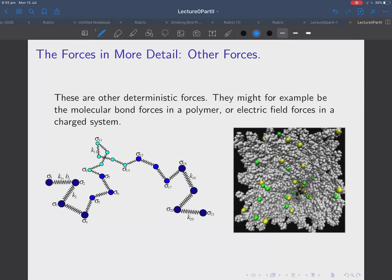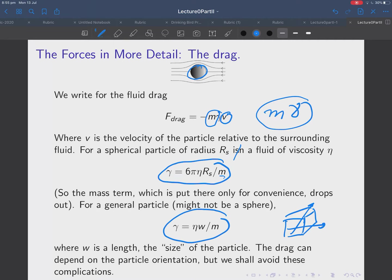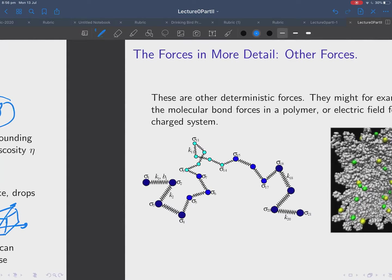So, what other forces are likely to act on the system? Well, there are other deterministic forces. So, this is a deterministic force. Basically, it's not stochastic. This fluid drag is definitely deterministic. Okay. It's given by the law, which Mr. Stokes found in the 19th century. So, other forces.